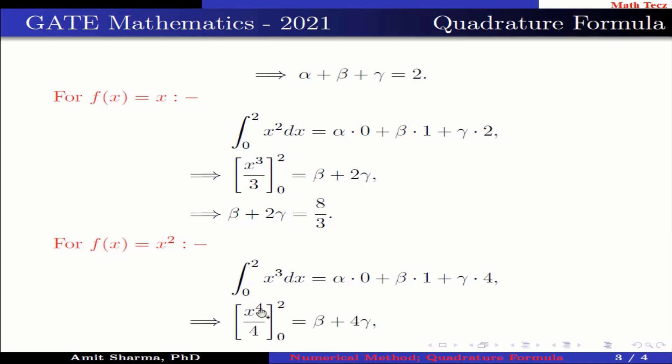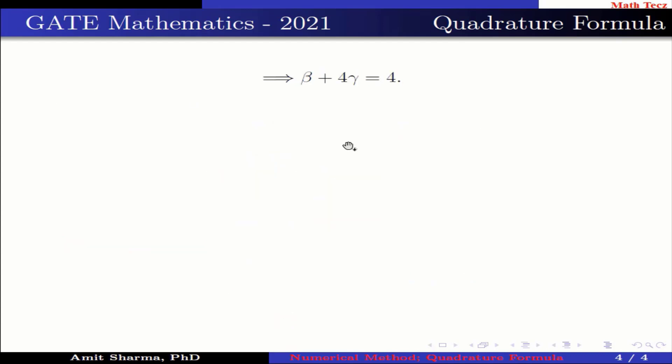The integration of x³ is x⁴ by 4, and substituting the limit 0 to 2, we have β plus 4γ equals 4.